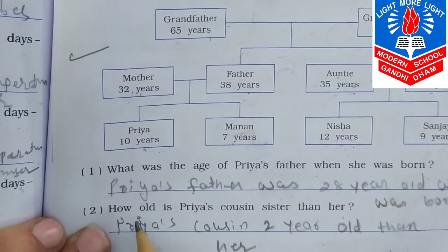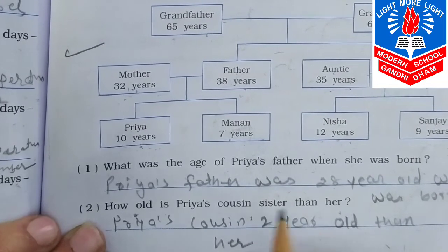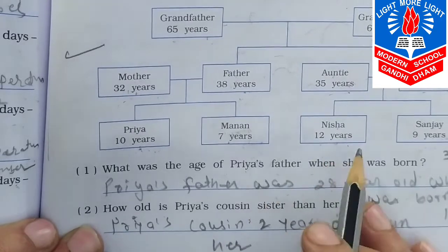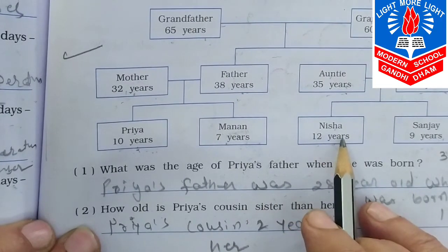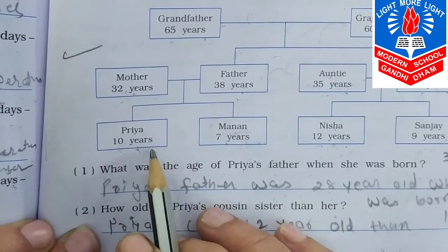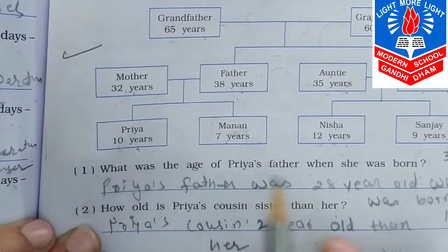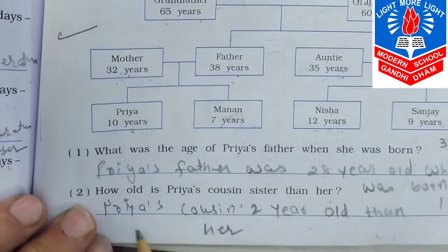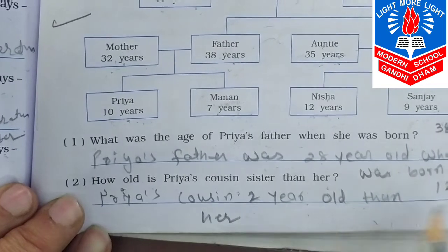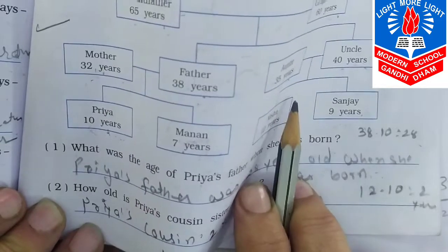Then, how old is Priya's cousin sister compared to her? Priya's cousin sister is Nisha — 12 years old. Priya's age is 10. So 12 minus 10 equals 2 years. Priya's cousin is 2 years older than her.